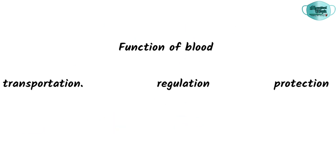The functions of blood can be divided into three main categories: transportation, regulation, and protection. In transportation, blood plays a role in respiration, nutrient carriage from the GIT, transportation of hormones from endocrine glands, and transportation of metabolic waste. It also regulates the pH, adjusts and maintains body temperature, and maintains water content of the cells.